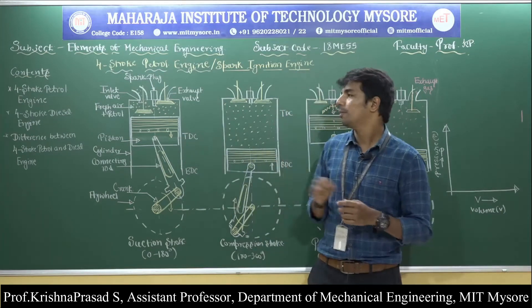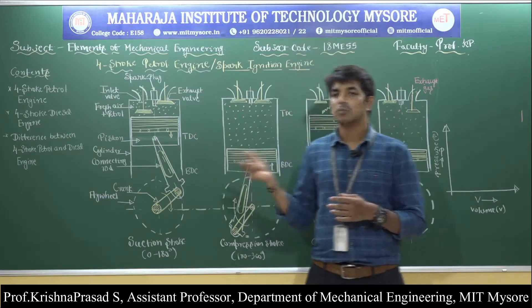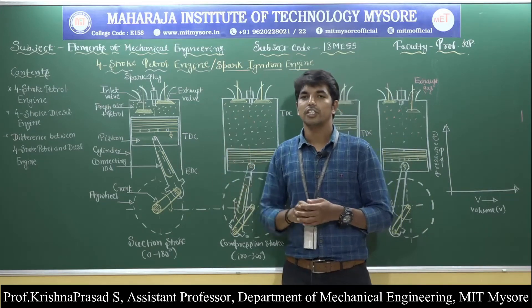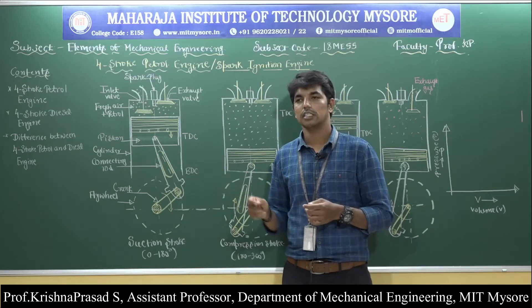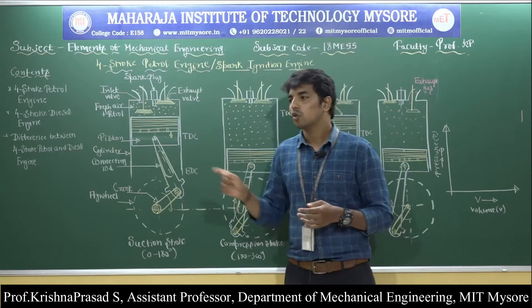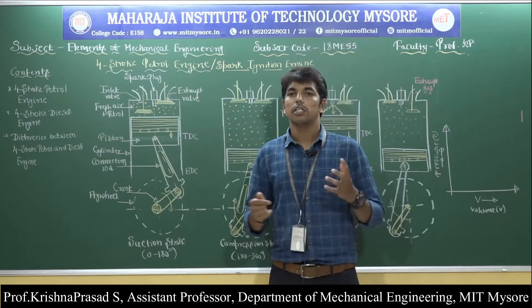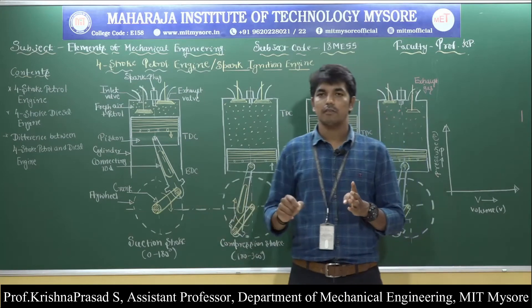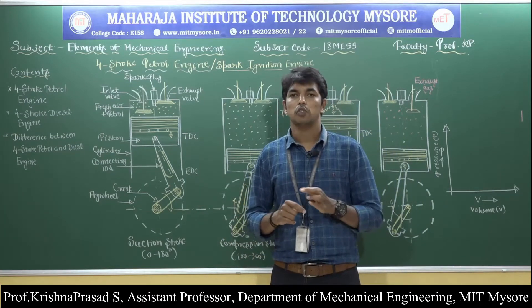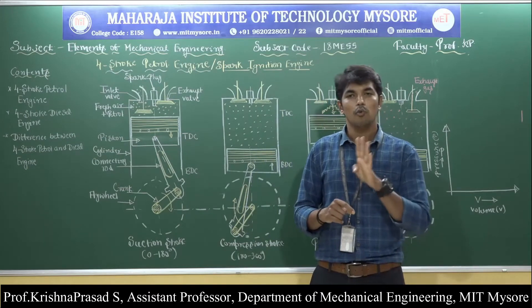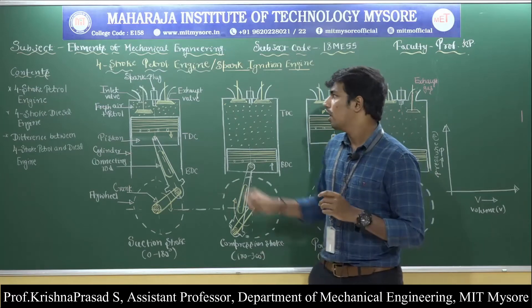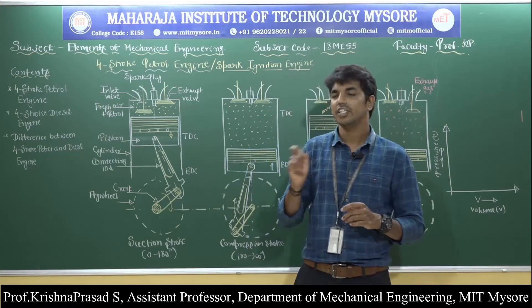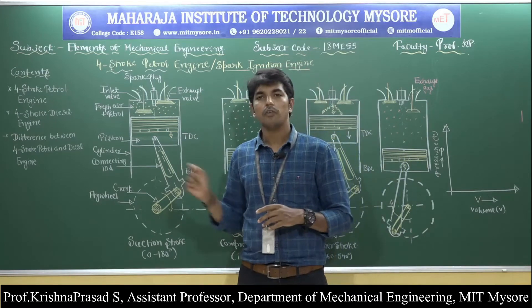Now, the working of the four-stroke petrol engine, also called the spark ignition engine. In this engine, the spark plug ignites the air-fuel mixture present inside the engine cylinder. In the four-stroke petrol engine, the working cycle is completed in four different strokes and two revolutions of the crankshaft — that is 0 to 720 degrees. It works on the theoretical Otto cycle, also known as the constant volume heat addition cycle. The four strokes are: suction stroke, compression stroke, power stroke, and exhaust stroke.